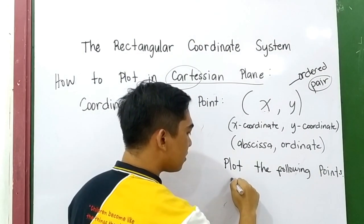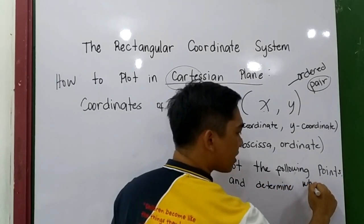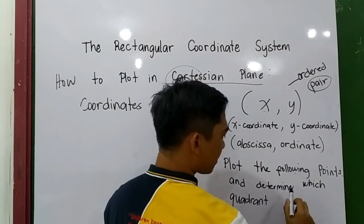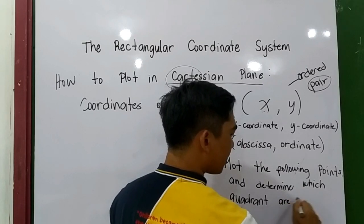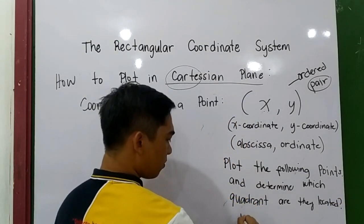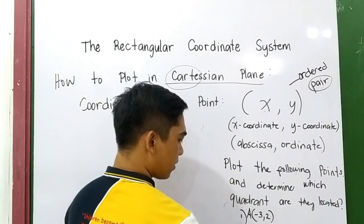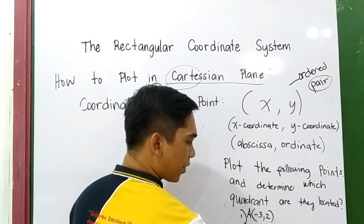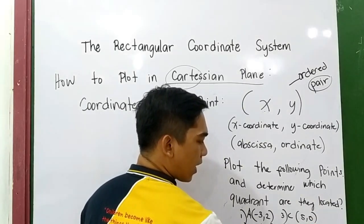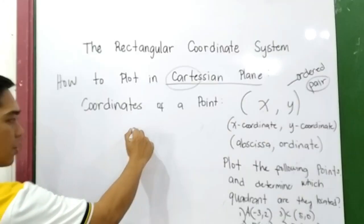Plot the following points and determine which quadrant they are located in. Number one: point A, negative 3, 2. Number two: point B, 3, 4. Point C, 5, 0. Number four: point D, 3, negative 3. Okay, let's create our Cartesian plane.